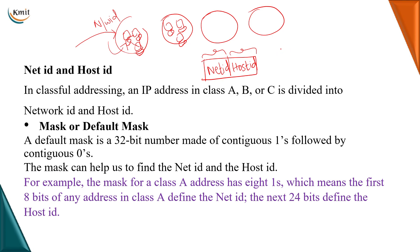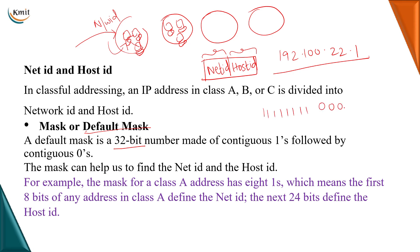Our 4-byte IP address, for example 192.100.22.1 — how do I identify which part specifies the network ID and which part specifies the host ID? To know this, we make use of a default mask. A mask is a 32-bit number because your IP address is also a 32-bit number. What does this mask consist of? It consists of contiguous ones and contiguous zeros. How many contiguous ones and how many contiguous zeros? Let us understand this.